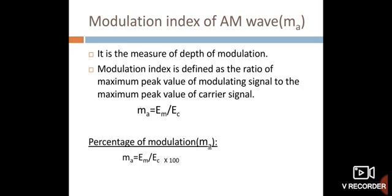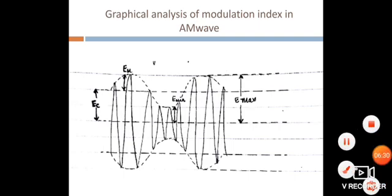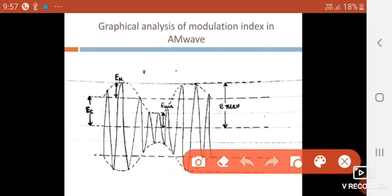Modulation index of amplitude modulated wave, ma, is a measure of depth of modulation. It is defined as the ratio of maximum peak value of modulating signal to the maximum peak value of carrier signal: ma = Em / Ec. Percentage modulation: ma = (Em / Ec) × 100. From the figure, 2Em = Emax − Emin.